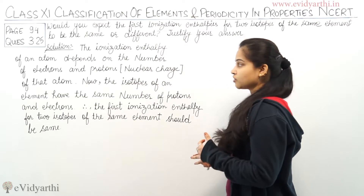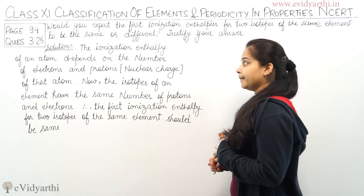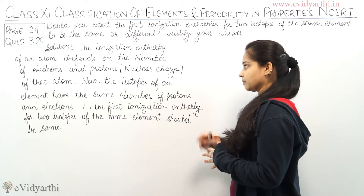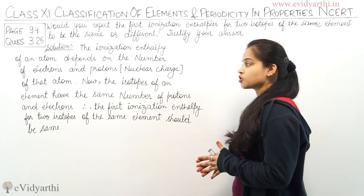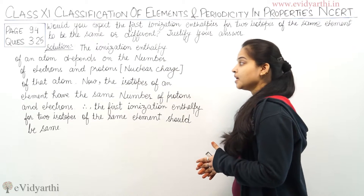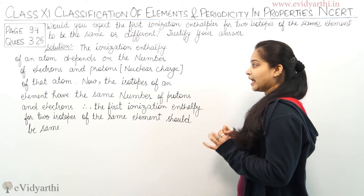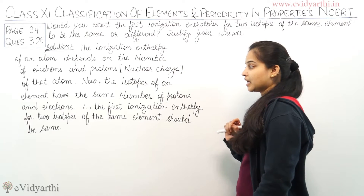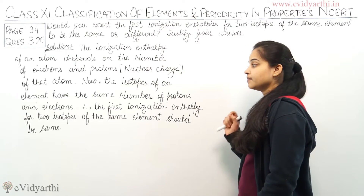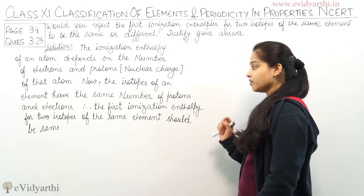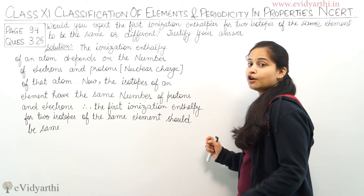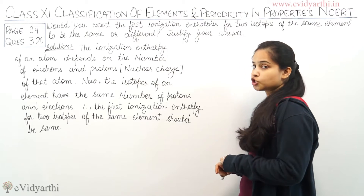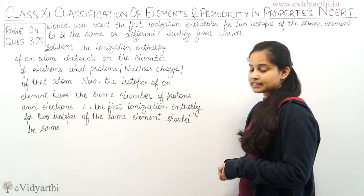The ionization enthalpy of an atom depends on the number of electrons and protons and the neutral charge of that atom. The isotopes of an element have the same number of protons and electrons. Therefore, the first ionization enthalpy for two isotopes of the same element should be the same.